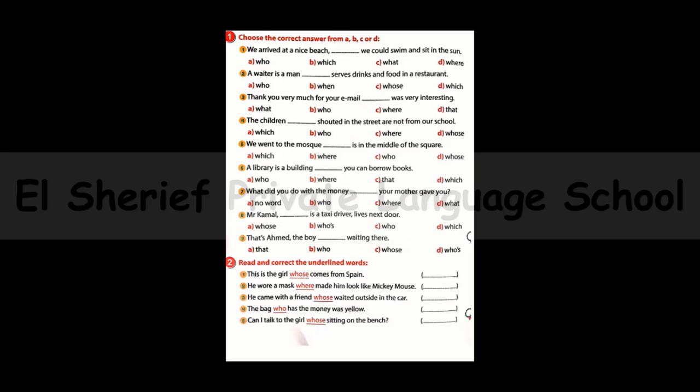Now we have some questions on grammar. Number one: We arrived at a nice beach ___ we could swim and sit in the sun. The answer is: 'where we could swim and sit in the sun' — using the relative pronoun 'where.'